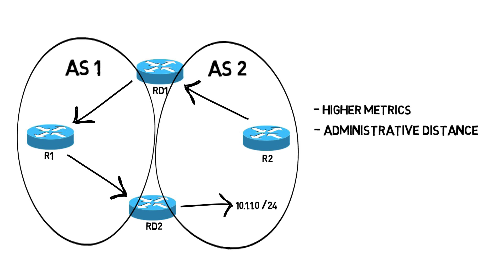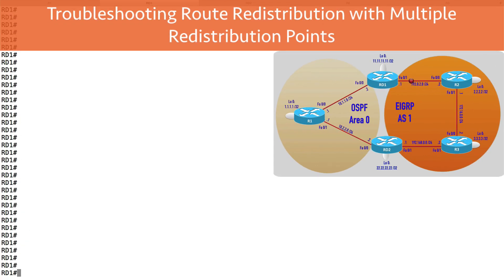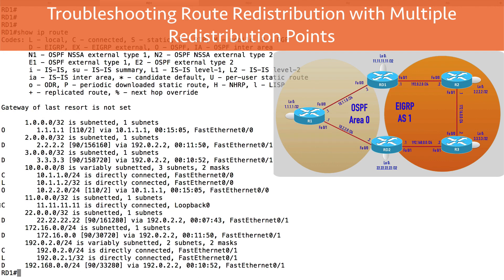But depending on what routing protocol you're using and how things are configured, you might need to statically configure the administrative distance. Let's hop out to a live interface and take a look at how easy it is to set the administrative distance for a routing protocol. I'm sitting on router RD1, and it is configured for route redistribution. If we do a show IP route, we can see that we've learned routes via OSPF and we've learned routes via EIGRP.